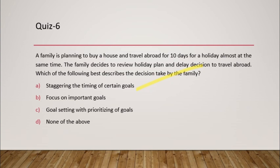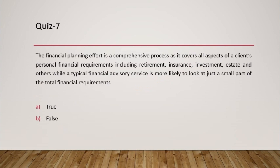Question 7 is a true/false question about the difference between financial planning and financial advisory. The statement is: 'Financial planning is a comprehensive process covering all aspects of a client's personal financial requirements — retirement, insurance, investment, estate, and others — while financial advisory is more likely to look at just a small part of the total financial requirement.' This statement is true.